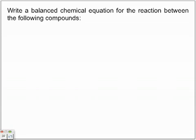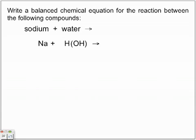Write a balanced chemical equation for the reaction between sodium plus water. Sodium is Na, water is H₂O. Remember, we can also write water as HOH. By writing it this way, we treat this H as the metal and obviously the O as the non-metal. So we can identify we have two metals — the Na and the H — and we're going to treat H as a metal, even though hydrogen is in a class of its own.